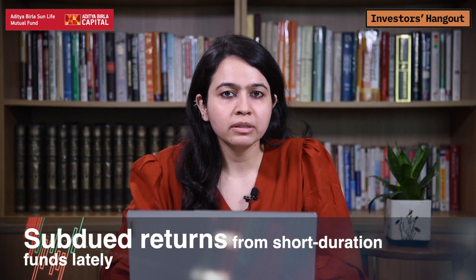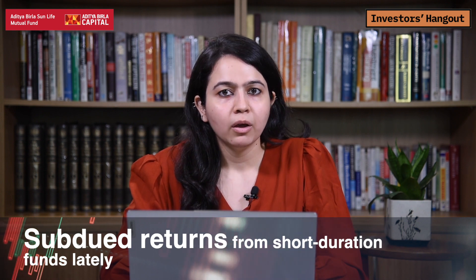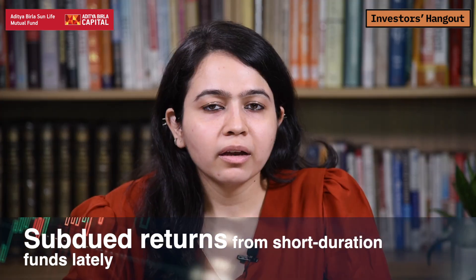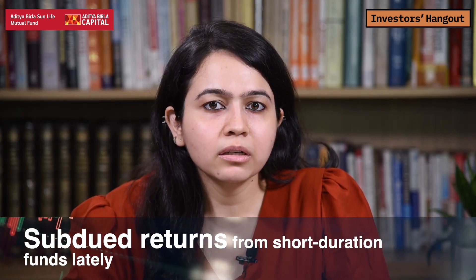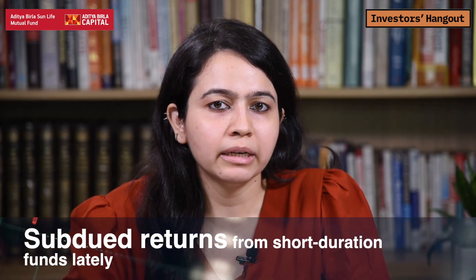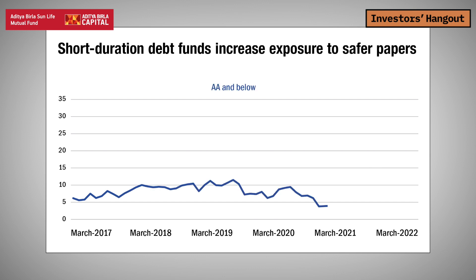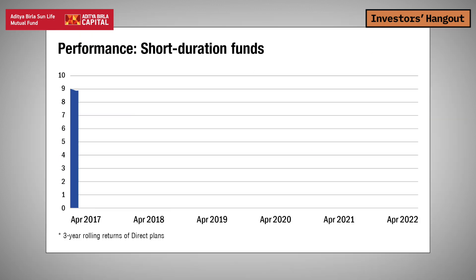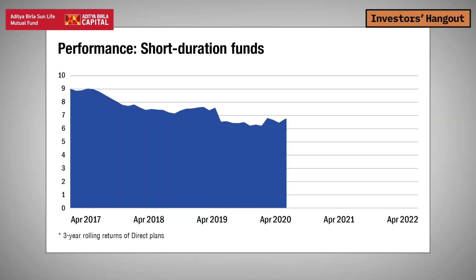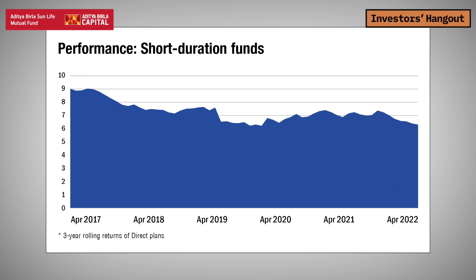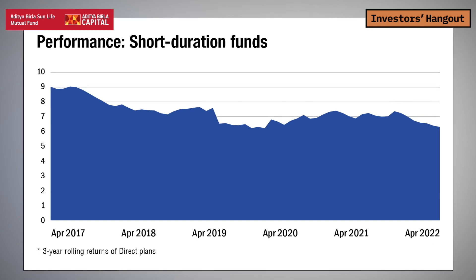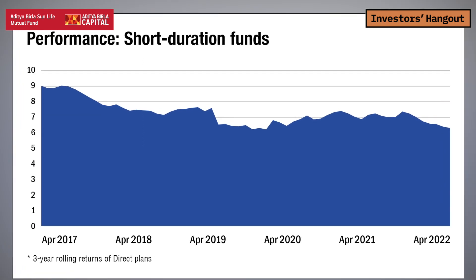Returns of short duration funds have been subdued lately — it's no surprise, as they've been in a low interest rate regime for so long. Another factor affecting their returns is the conservative approach these funds had taken, investing in safer assets following the aftermath of the ILFS fiasco of 2018. Still, the three-year average return of the category stands at 6%. What you also get here is a favorable tax treatment if you hold these funds for a period of three years, because you get the benefit of indexation.